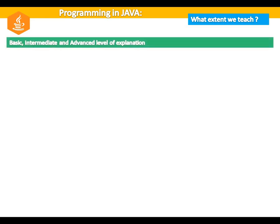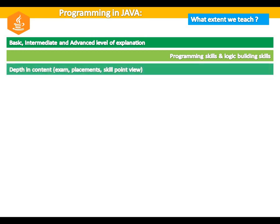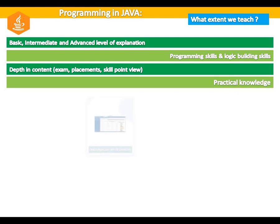In Programming in Java: basic, intermediate, and advanced level of explanation, programming skills and logic building skills, depth in content, exam point of view, placement point of view, skill point of view, practical knowledge, desktop application with DB connectivity, database connectivity, web application development with applets, JSP, JSF, and Serverless, and many more.